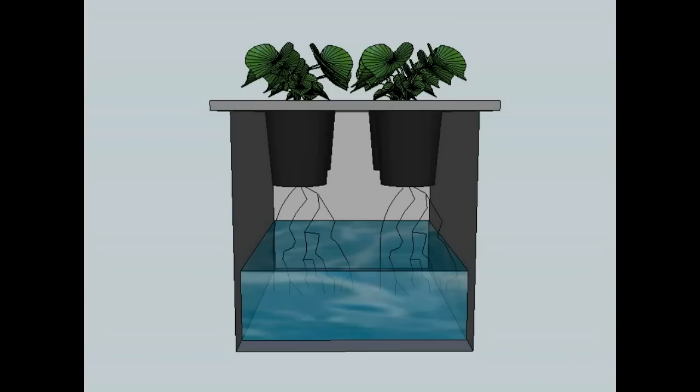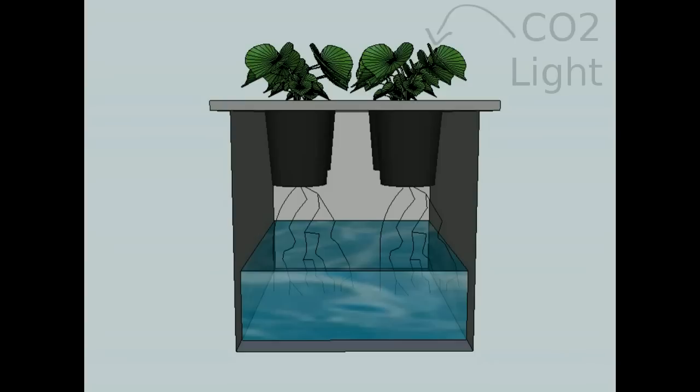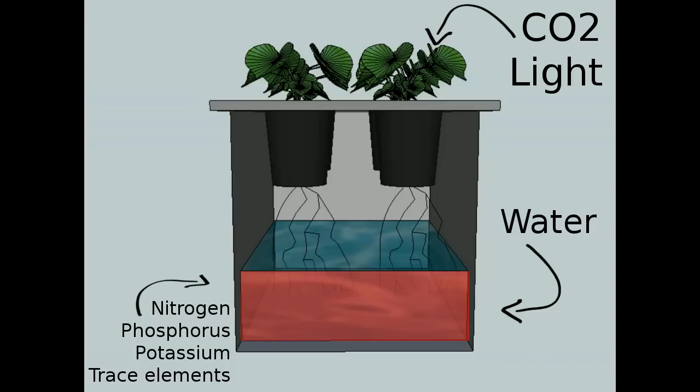For a plant to grow it needs a couple of things. First of all it needs carbon dioxide which it extracts from the air through the leaves. Secondly it needs water which it gets through the roots. It also needs some chemical elements like nitrogen, phosphorus, potassium and some other trace elements to grow. These are absorbed via the roots.